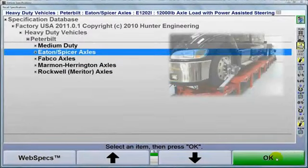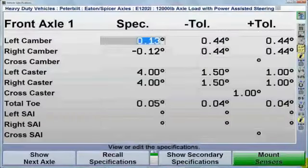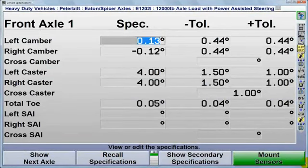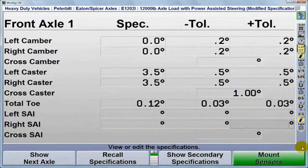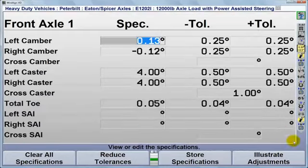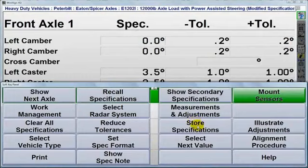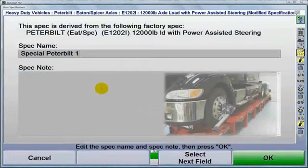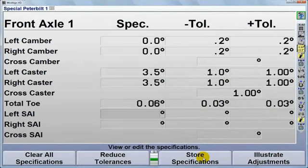Factory alignment specifications are always your best starting point, but we know there can be exceptions. With WinAlign HD, you can quickly edit individual specs or, if required, change everything across the board. If you feel the tolerances are too wide, merely select Reduce Tolerances. Plus, any edited set of specs can be saved for future use. Hunter's Spec Database feature will easily accommodate what works best for you and your customer.